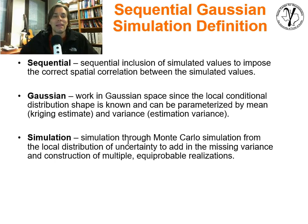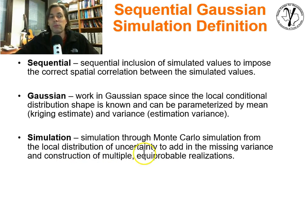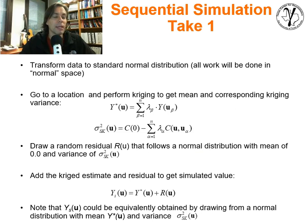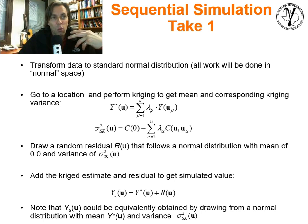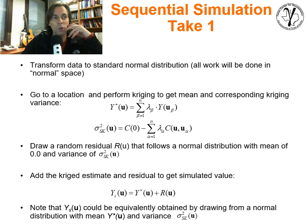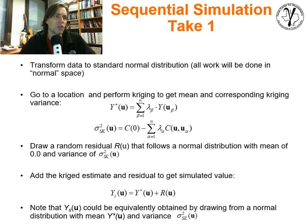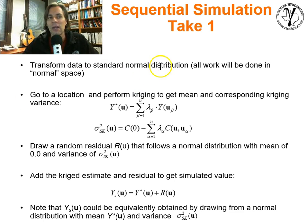Simulation: we use Monte Carlo simulation to draw from the Gaussian distribution — the local conditional distributions that we calculate from kriging. We draw from them with Monte Carlo simulation, and that allows us to add in the missing variance and to construct multiple equal-probable realizations. Take number one: we'll have more words at the overall sequential simulation framework. Take number two, we'll show pictures and show it more illustratively how it gets done in an actual grid.